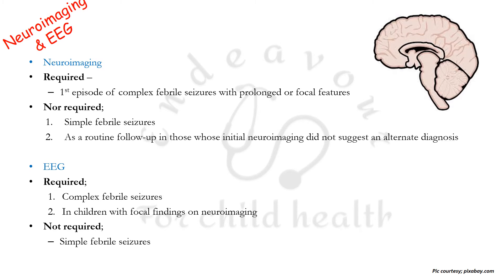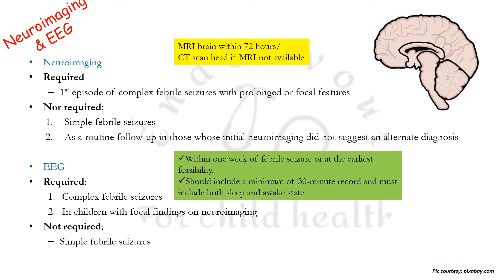EEG is to be done in patients with complex febrile seizures and children with focal findings on neuroimaging, and is not required in simple febrile seizures. The preferred neuroimaging is MRI brain, to be done within 72 hours, or CT scan head if MRI is not available. An EEG should be done within one week of febrile seizure or at the earliest feasibility, including at least a 30-minute record capturing both sleep and awake states.